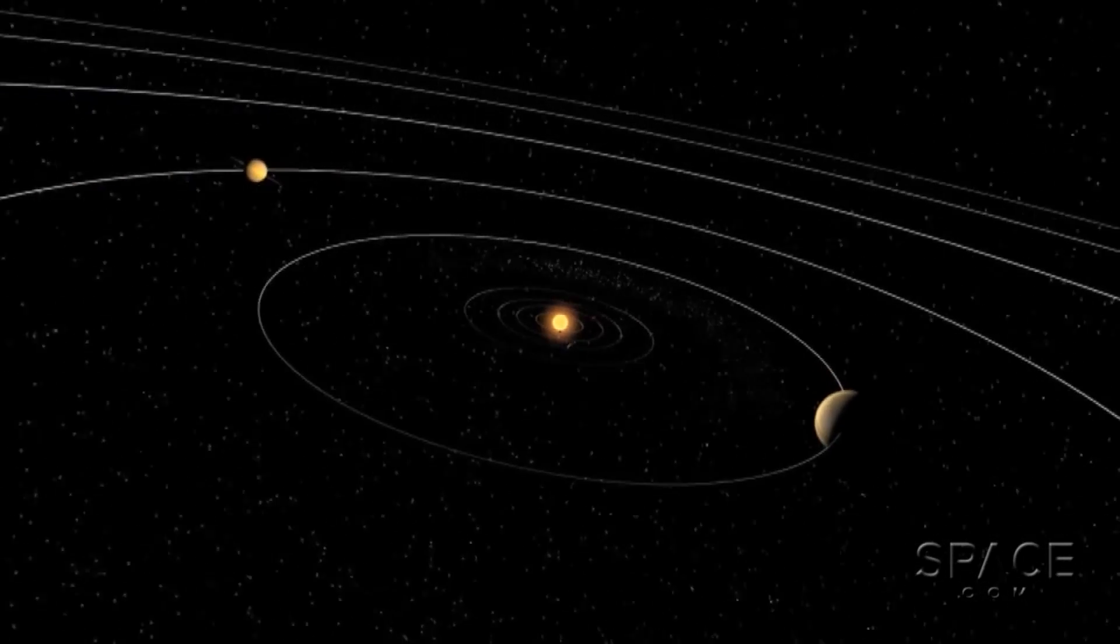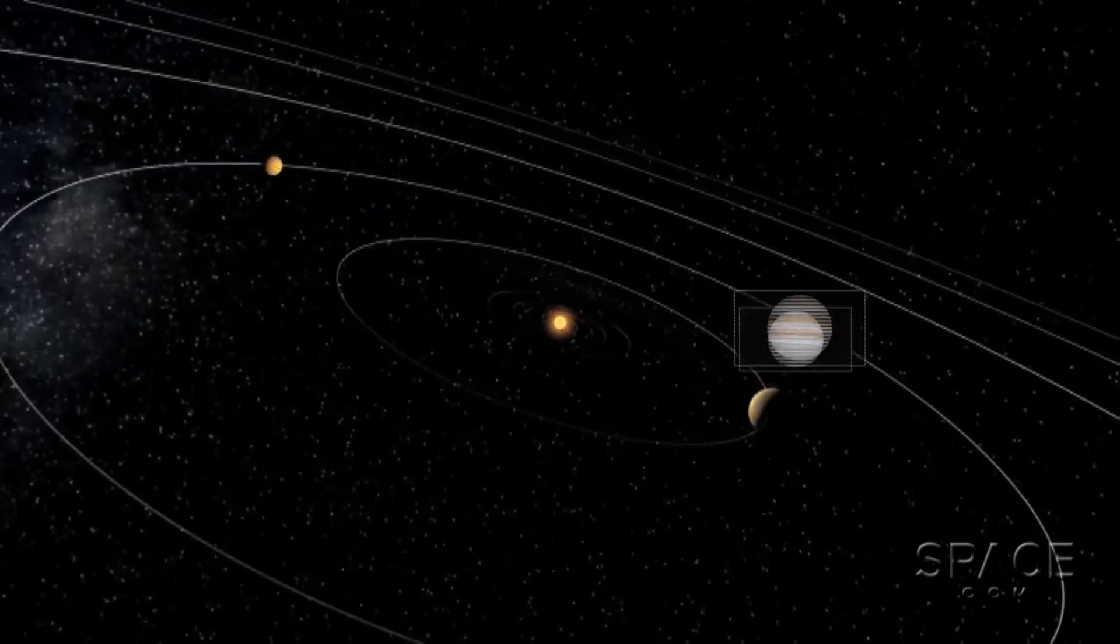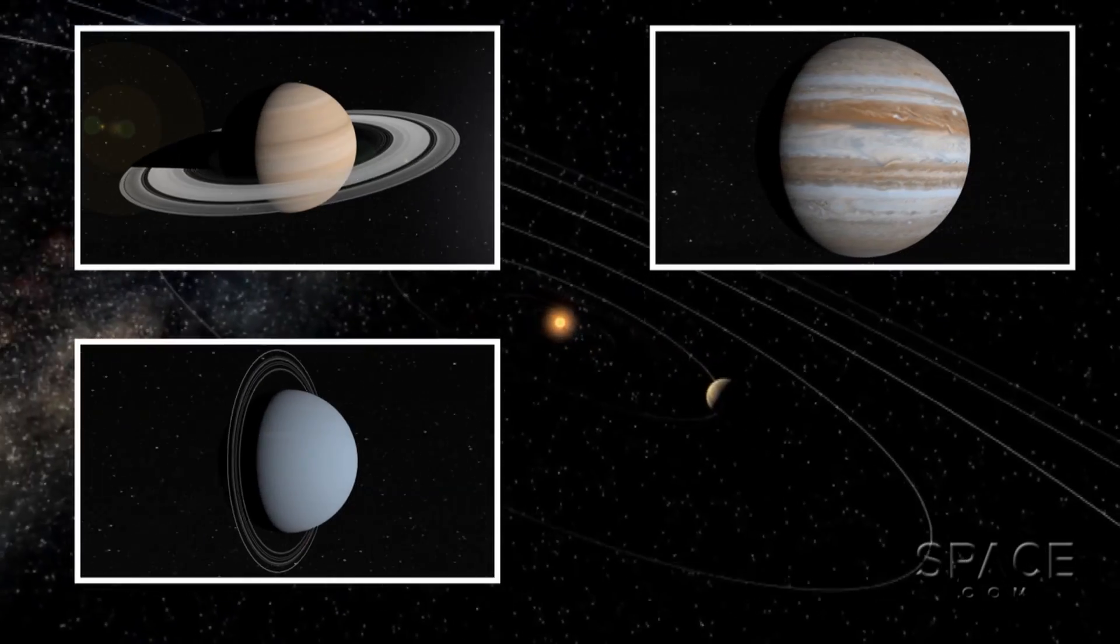and the outer solar system containing the gas giants Jupiter, Saturn, Uranus, and Neptune.